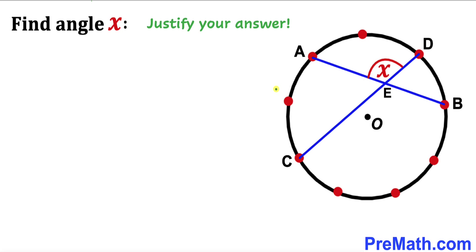Welcome to pre-math. In this video we have got these nine red dots that divide this circle into nine equal parts, such that the center of this circle is O. Moreover, these chords AB and CD intersect each other at point E.